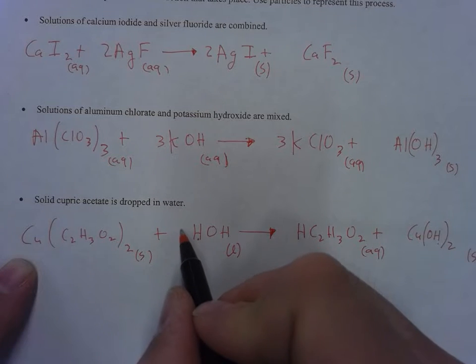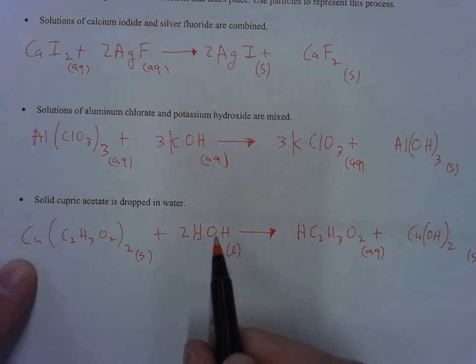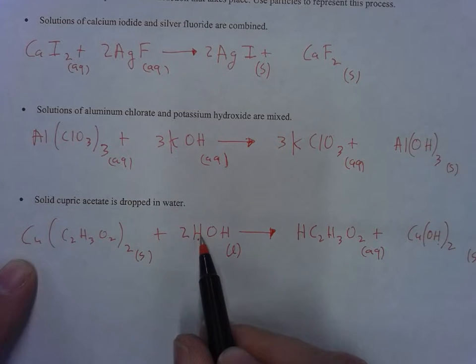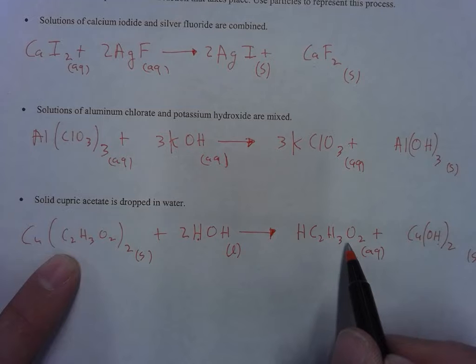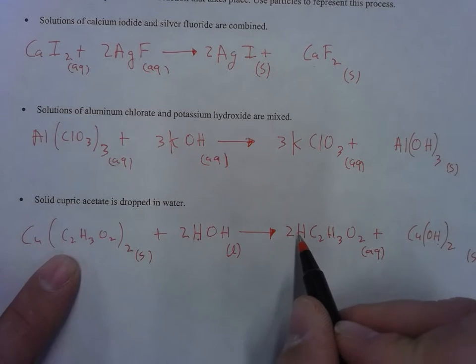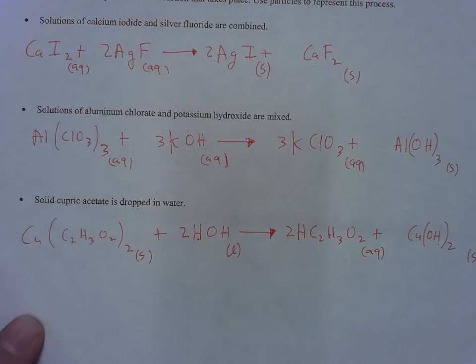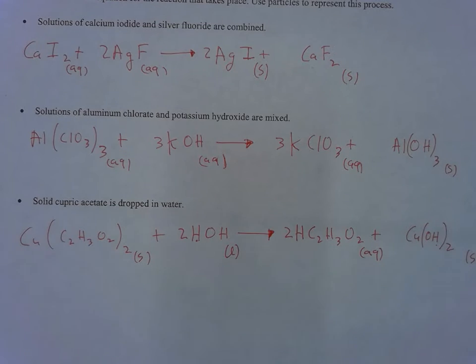Now we go through and balance. One copper, one copper. Two hydroxides, one hydroxide—put a 2 there. Now we have two hydroxides and two H's. Two acetates here, one there. Put a 2 in front, now we have two H's, two acetates, and we are balanced. That is how you do these. They're quite a lot of fun because we're bringing everything we learned together. You can go ahead and do worksheet 10.2.